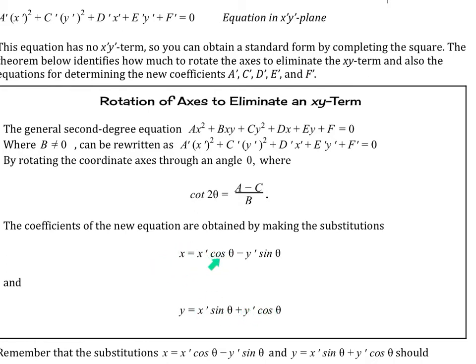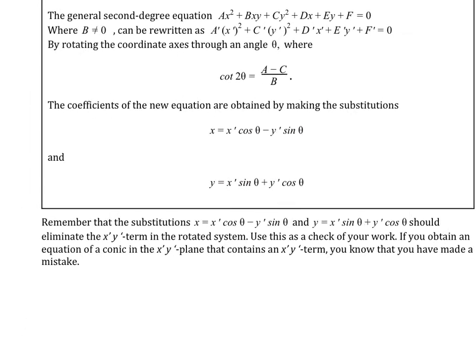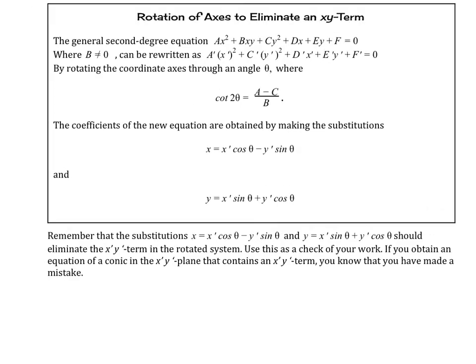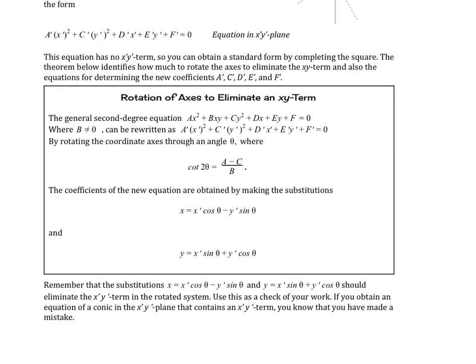So with x, it's the cosine term first, then negative. With y, we use the sine first, then positive. Note that these substitutions should eliminate the x-prime y-prime term in the rotated system. Use this as a check for your work — if after simplifying you still have an x-prime y-prime term, you know you made a mistake somewhere and should go back and check. We'll see that when we do an example.